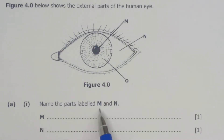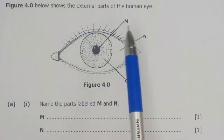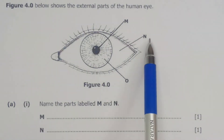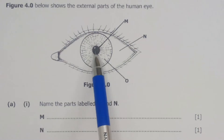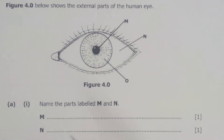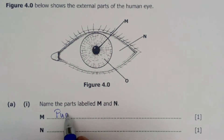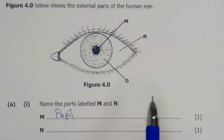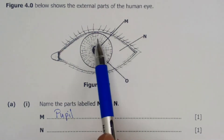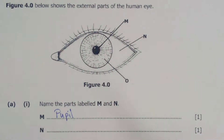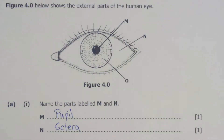The first part of the question is A1, and A1 says name the parts labeled M and N. So the dark part of the eye, M, is the pupil. Then N, the white part of the eye, is what is called the sclera. So those are the parts we are required to label for question number A1.